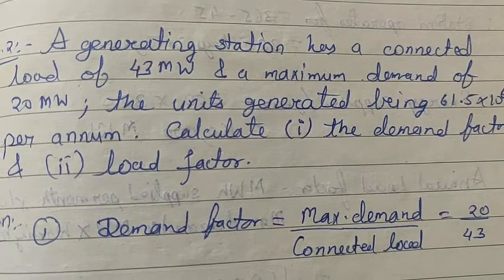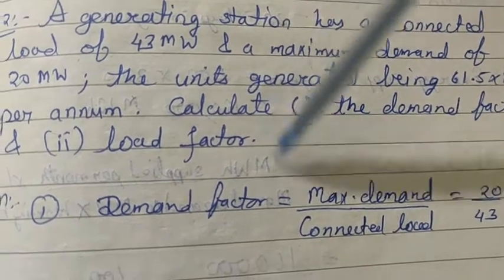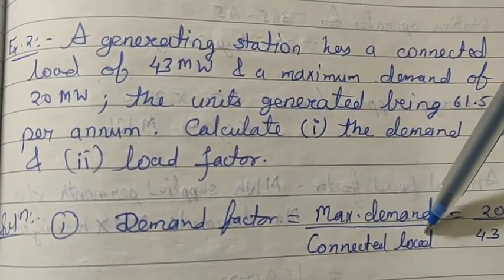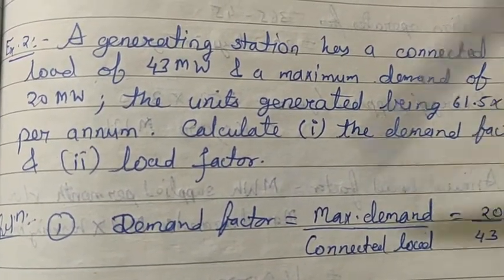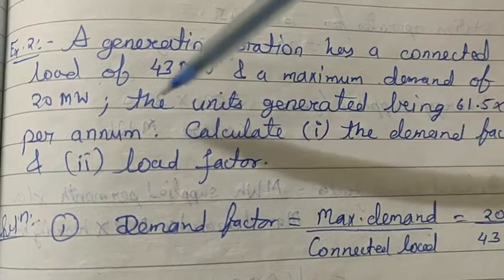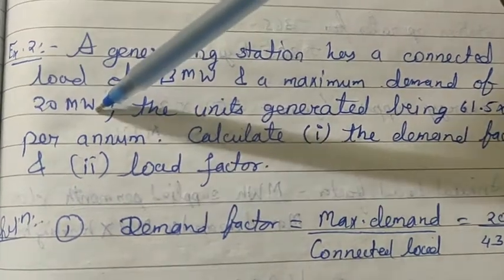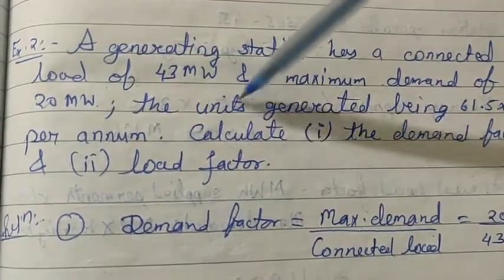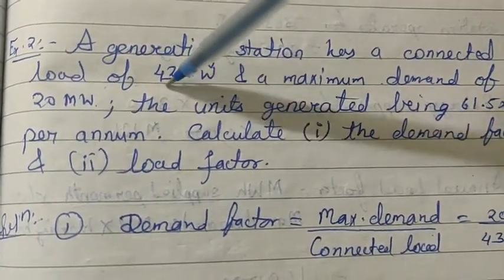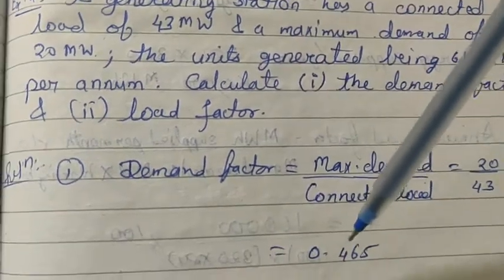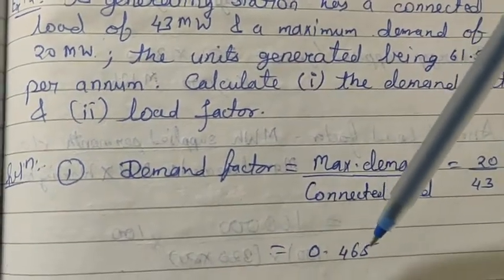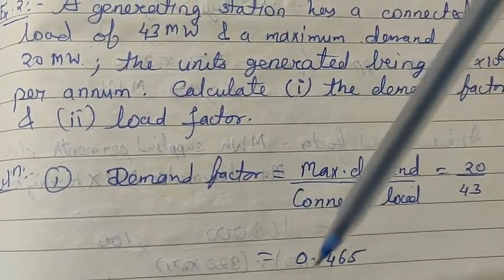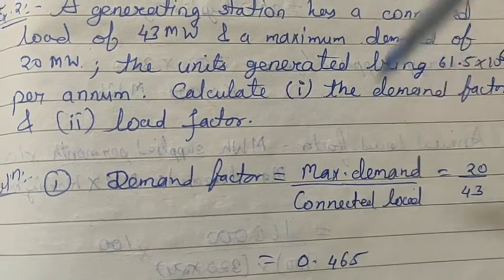The formula for demand factor is maximum demand divided by connected load. Maximum demand is 20 megawatt and connected load is 43 megawatt. So the demand factor comes out to be 0.465.